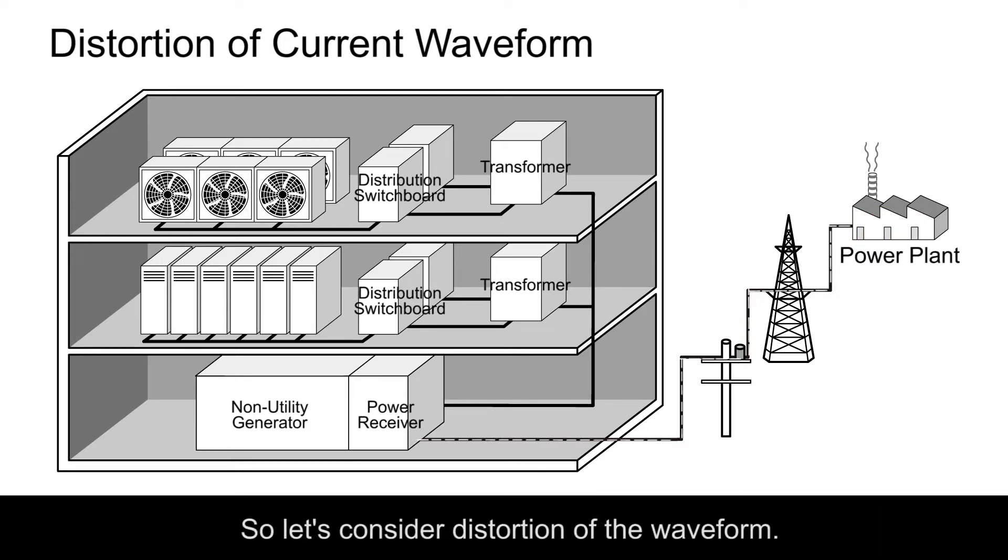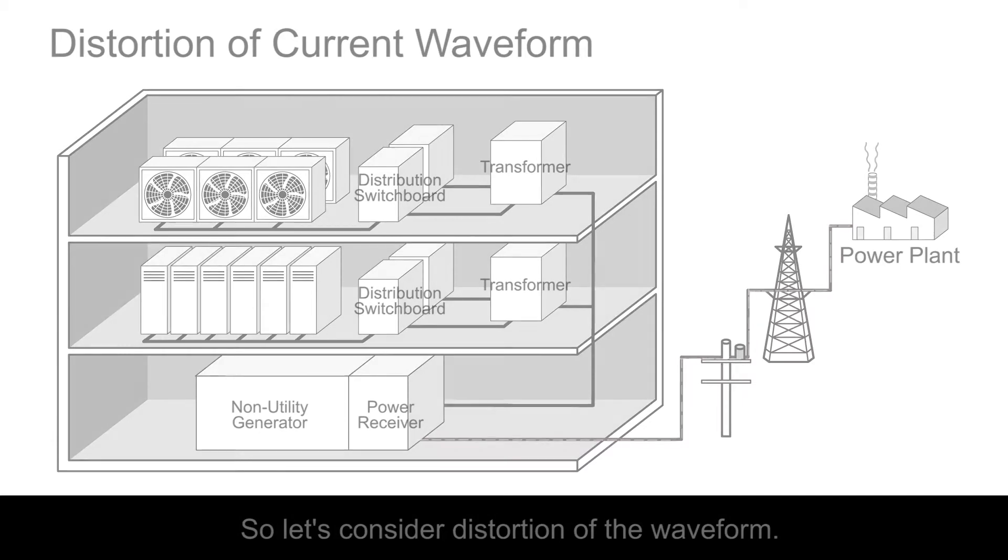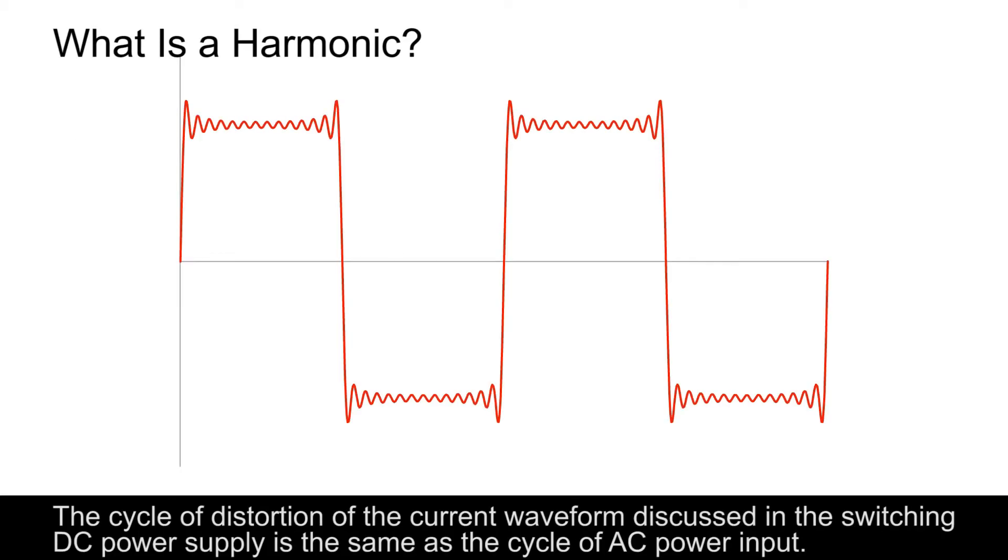So let's consider distortion of the waveform. The cycle of distortion of the current waveform discussed in the switching DC power supply is the same as the cycle of AC power input.